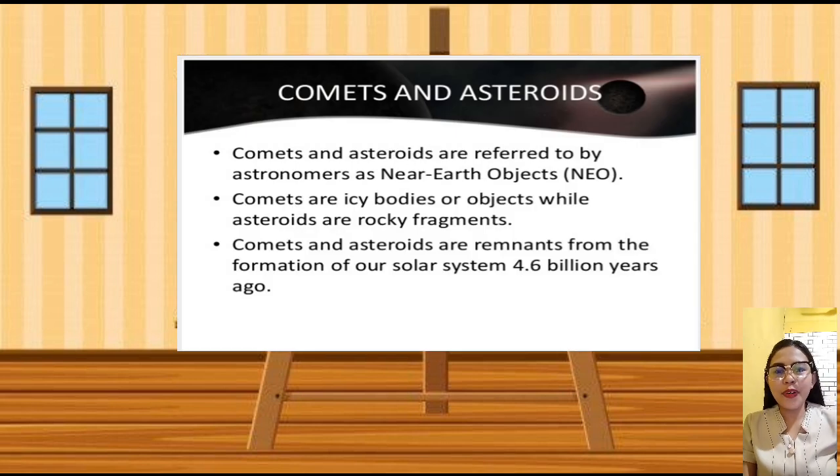What are comets and asteroids? Comets and asteroids are referred to by astronomers as near-Earth objects. Comets are icy bodies or objects, while asteroids are rocky fragments.